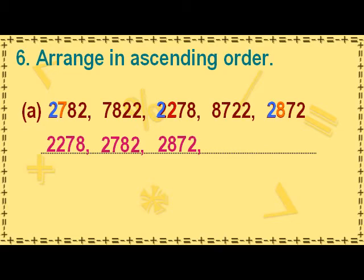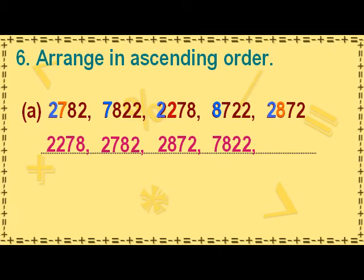Let us now look at the remaining numbers 7822 and 8722. In the thousands place, the digit 7 in 7822 is smaller than the digit 8 in 8722. So the next two numbers in the ascending order are 7822 and 8722.